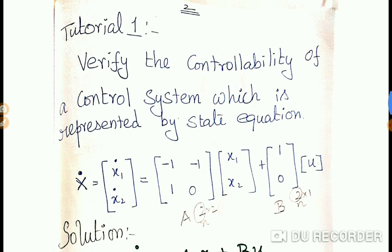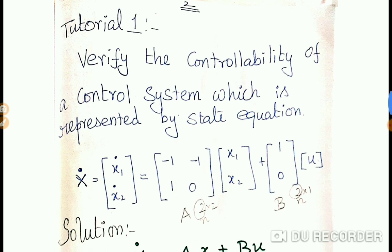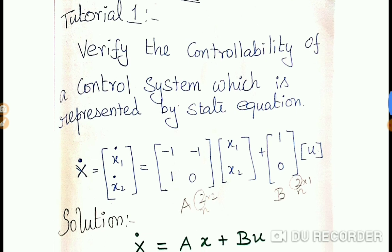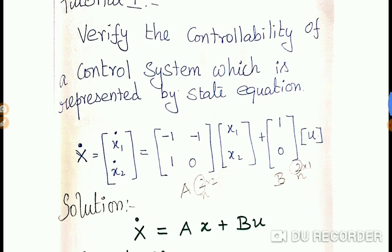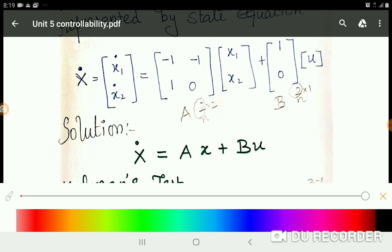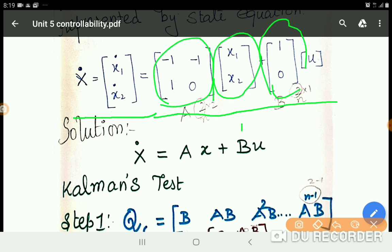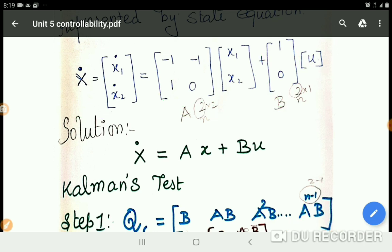Here is the problem given: verify the controllability of a control system which is represented by the state equation. See the state equation given in the problem: x dot equal to x₁ dot, x₂ dot, which is equal to matrix into x₁, x₂, then with a matrix and u. This is the problem given.